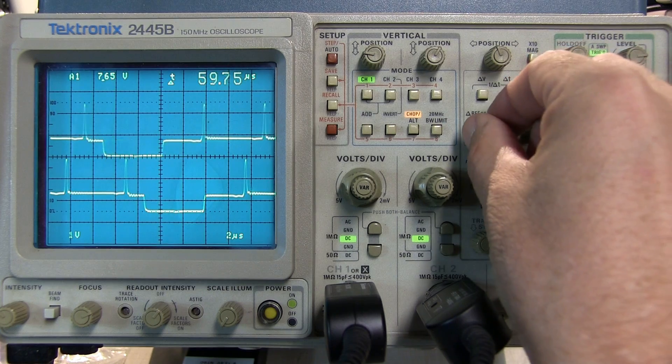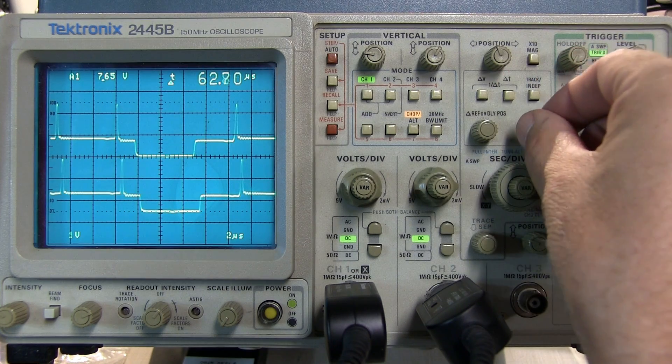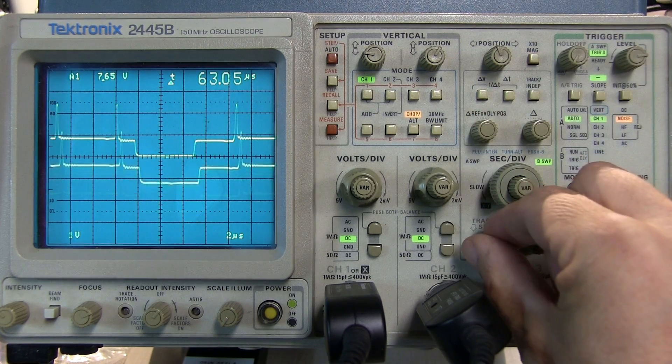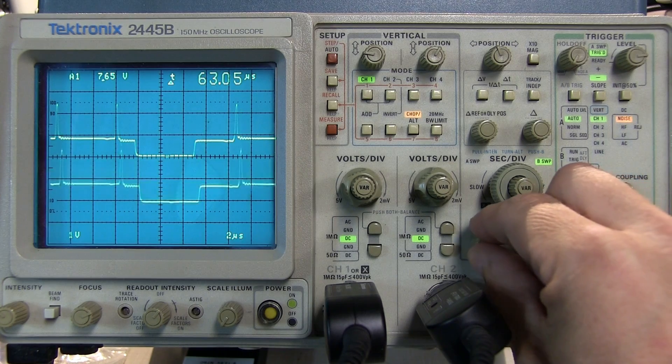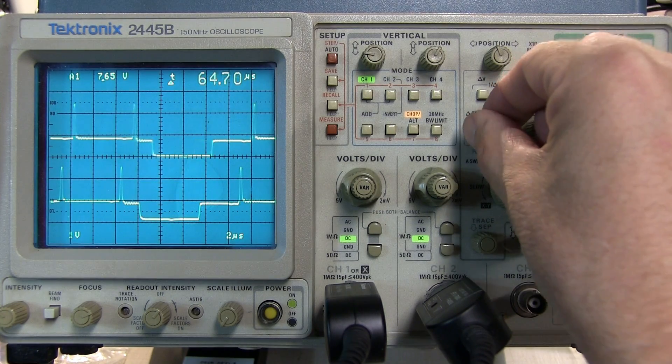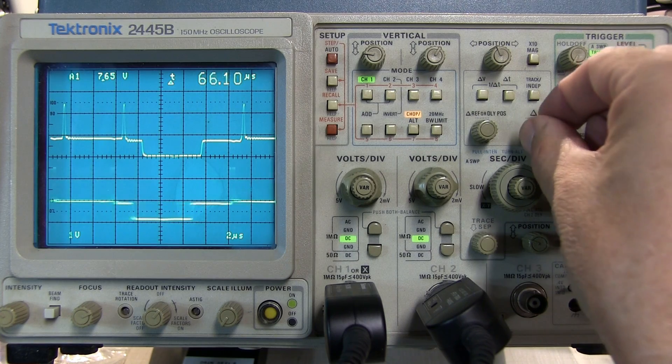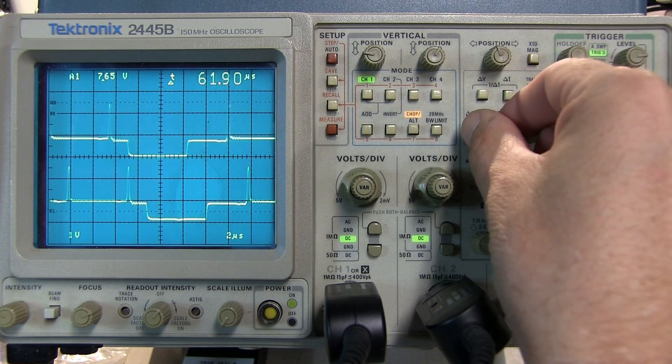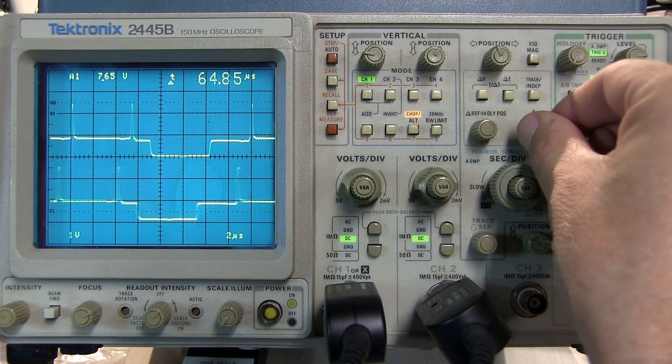Since the B sweep is now doing a Delta T I can actually move the position of either of these independently and the trace separation knob will just control the separation of the two portions of the A sweep that we're looking at with the Delta T function in the B sweep.